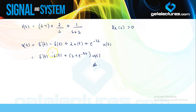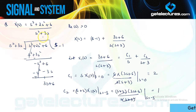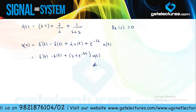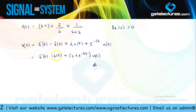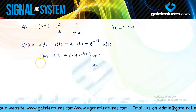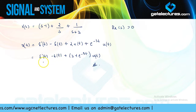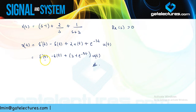Since X of S was an improper rational function — the power of the numerator was greater than the power of the denominator — the inverse Laplace transform x(t) contains impulse functions and their derivatives. This happened because X of S was an improper fraction.